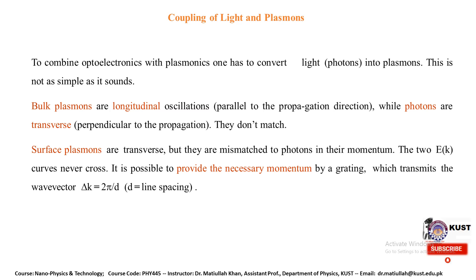If we look toward surface plasmons, they have transverse oscillation perpendicular to propagation. However, they are mismatched to photons in their momentum. The two momentum curves never cross, so it is possible to provide the necessary momentum by modifying the momentum using a grating, which transmits a wave vector Δk = 2π/d, where d represents the line spacing of the grating.